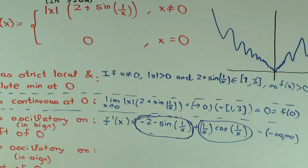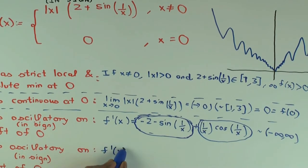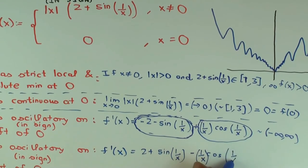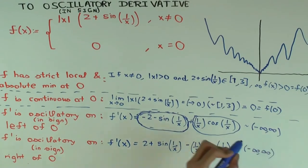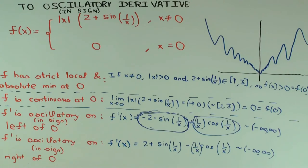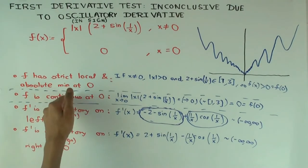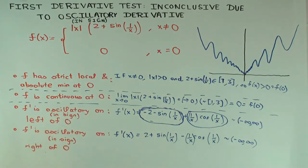What about the right side? The derivative on the right looks just like the negative of the left-side expression, because instead of minus x you have plus x, so the minus sign comes up. By the same logic, the derivative is also oscillating between minus infinity and infinity on the immediate right of 0. So the derivative does not have a single fixed sign on the immediate right either. Here we have a situation where there is a local minimum — in fact, an absolute minimum — the function is continuous, the derivative exists on both sides, but it doesn't have a constant sign on either side.